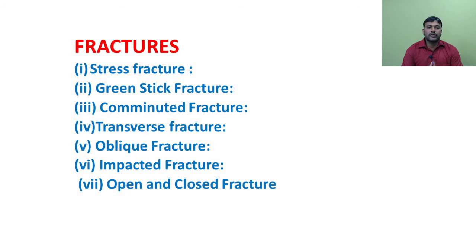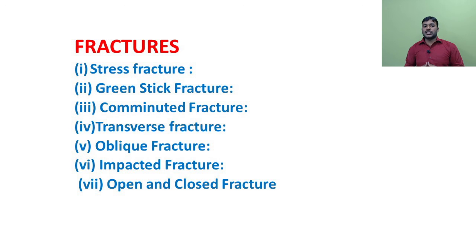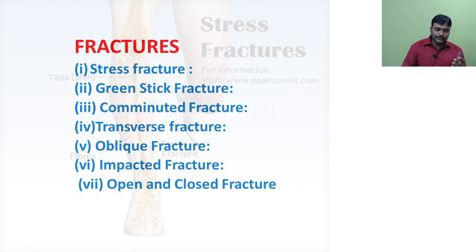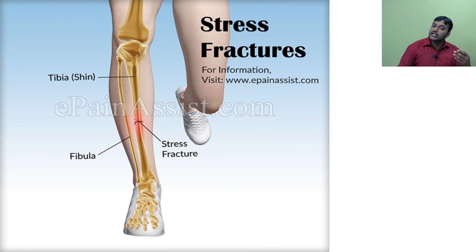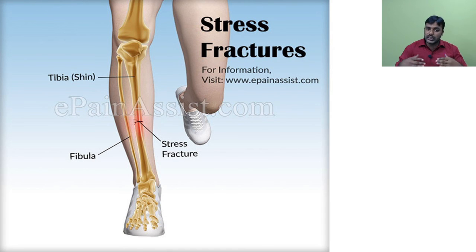Fractures: a fracture is a broken or cracked bone, caused by a wrenching force. Types of fractures include: stress fracture, green stick fracture, comminuted fracture, transverse fracture, oblique fracture, impacted fracture, and open and closed fracture. Stress fractures are small cracks — they are difficult to see on x-ray and are caused by repetitive use of bones and joints; road running may be a cause of stress fracture.